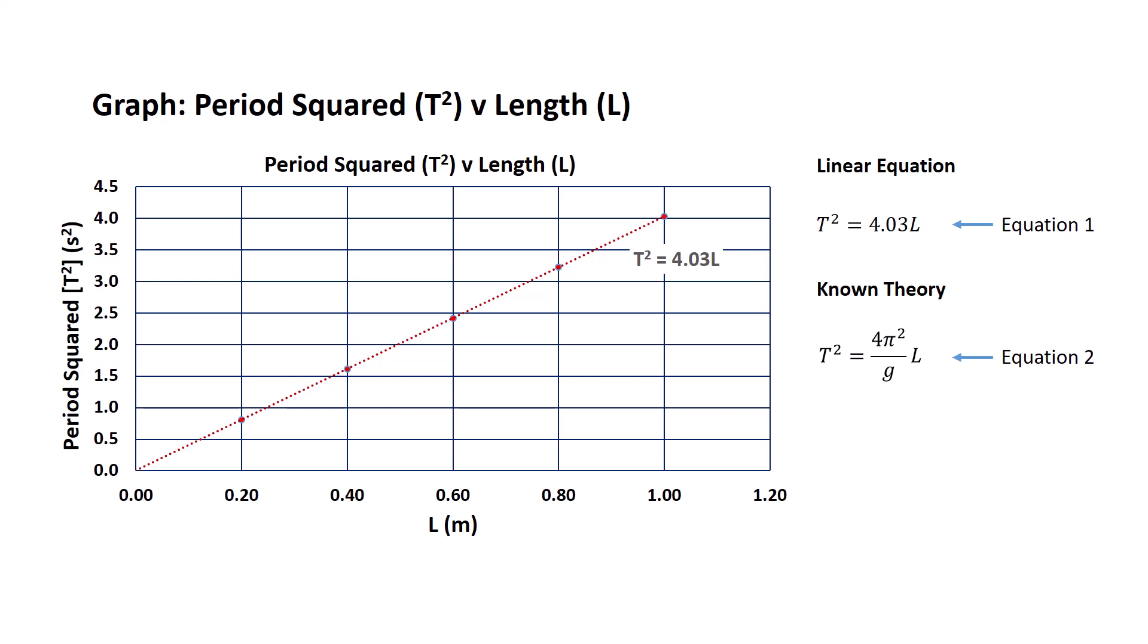So here's our two equations. We have the linear equation that we've just calculated from our data, and we have Huygens' equation rearranged in a similar format. Now observant viewers will see that the left-hand side of both equations are equal. If the left-hand side of both equations are equal, then the right-hand side of both equations must also be equal. So we can state that 4.03L is equal to 4 pi squared over g times L.